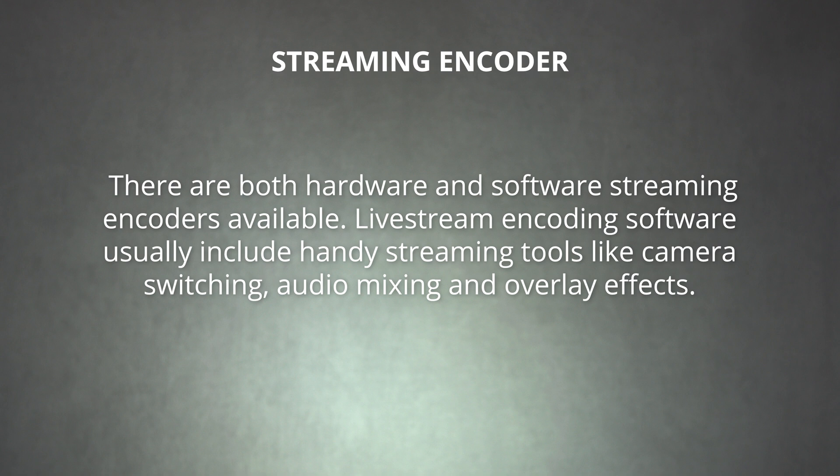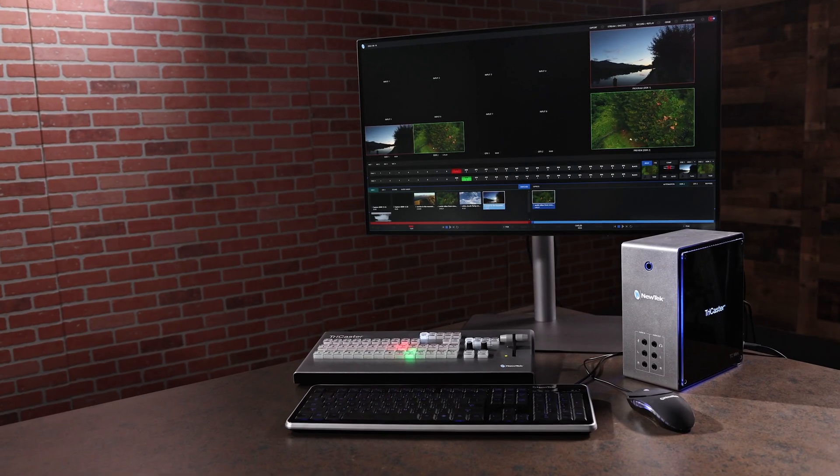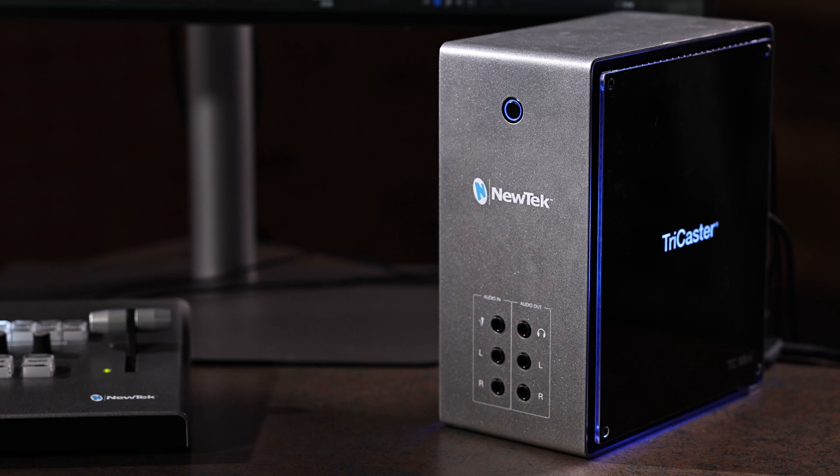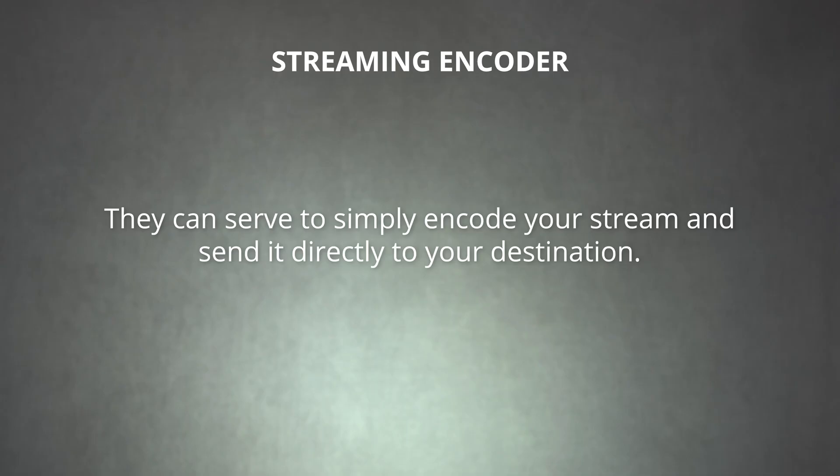There are both hardware and software streaming encoders available. Live stream encoding software usually includes handy streaming tools like camera switching, audio mixing, and overlay effects. However, you'll need a powerful computer to run it, especially as you add more cameras or increase resolution. Hardware encoders can take the form of full multimedia production systems with companion streaming software, like the NewTek TriCaster Mini 4K, or they can serve to simply encode your stream and send it directly to your destination. If you're just starting, try an affordable, often free, software encoder. Once you've learned more about streaming, you'll have a better idea of what you specifically need, and then you can invest in a more advanced streaming setup.